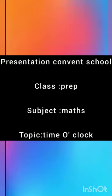Presentation: School class prep, subject maths, topic time o'clock. A clock has two hands. One hand is long and one is short. The short hand is called hour hand and the long hand is called minute's hand.